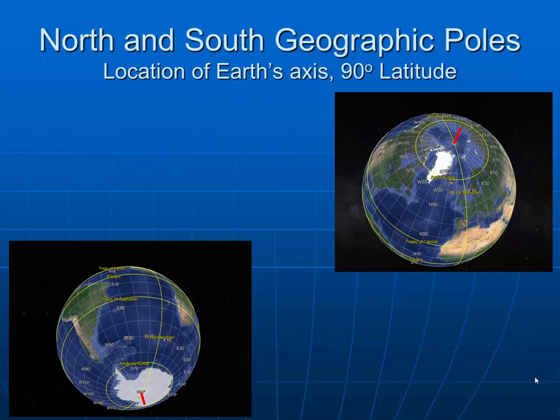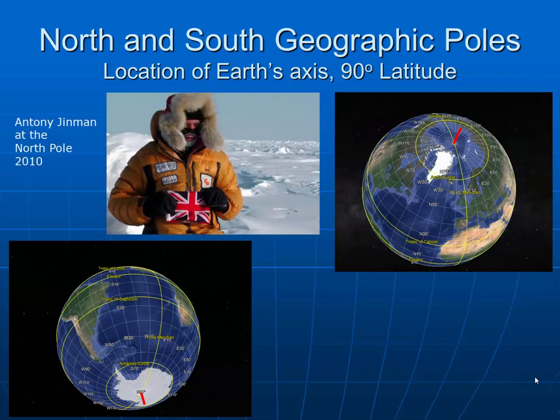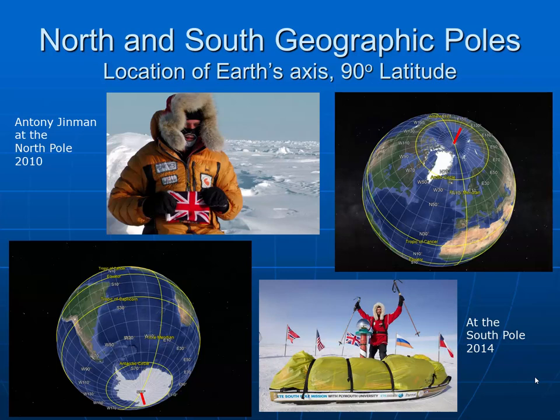Let's talk about a few specific geographic points. The north and south geographic poles are the location of the Earth's axis — the point around which the Earth rotates. The north and south geographic poles are designated to be 90 degrees north and 90 degrees south latitude. I had a good friend by the name of Antony Ginman who skied from Greenland to the North Pole in 2010, and on the other side of the planet he skied from the coast to the South Pole in 2014. Both of these images help us see that both the northern Arctic and the southern Antarctic are snow-covered and very desolate locations.